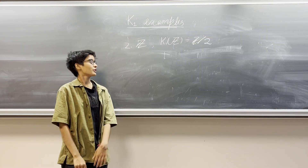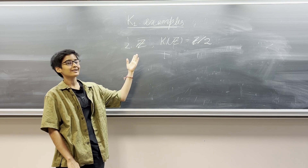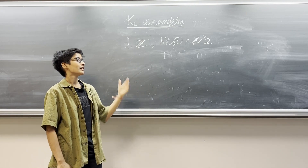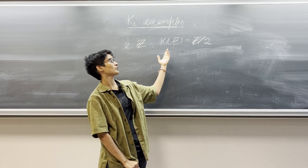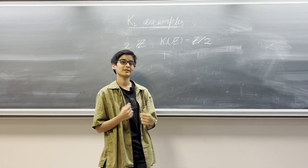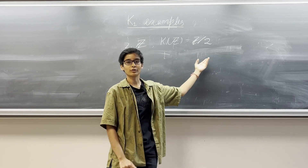For the next example, let us consider Z, that is the ring of integers. In this case we get that K1 of Z is again the invertible elements in Z, which gives us Z mod 2.